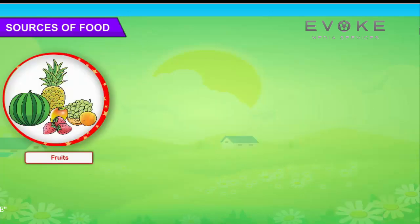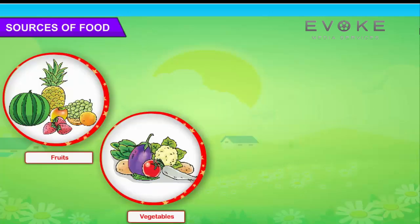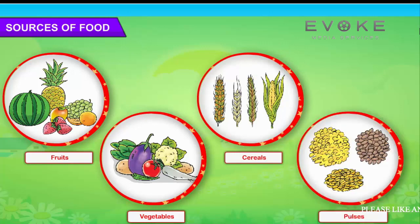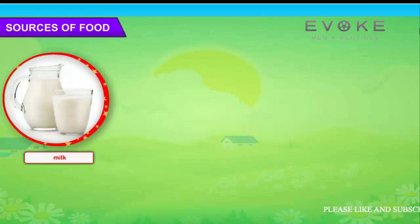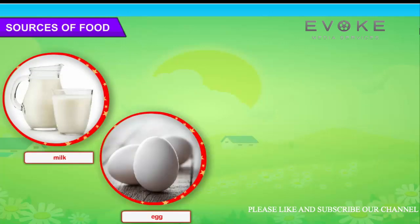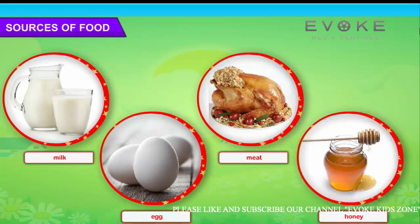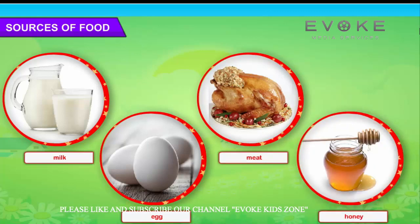Fruits, vegetables, cereals, pulses. We get milk, egg, meat and honey from animals. These animals are kept in the farm.